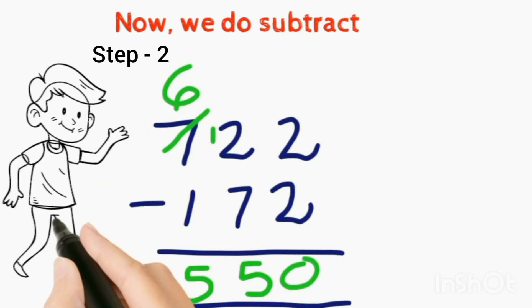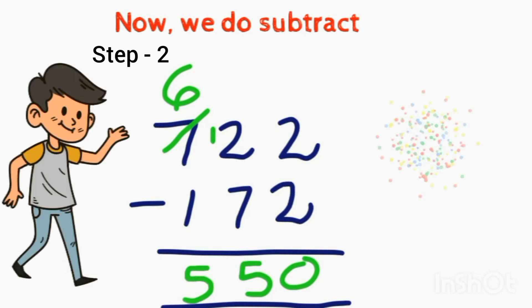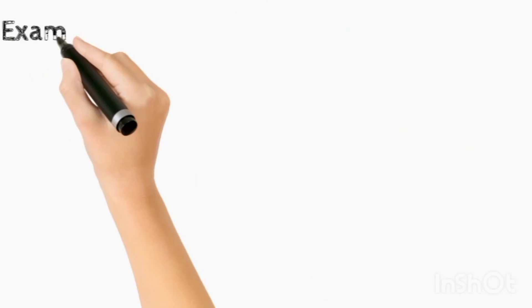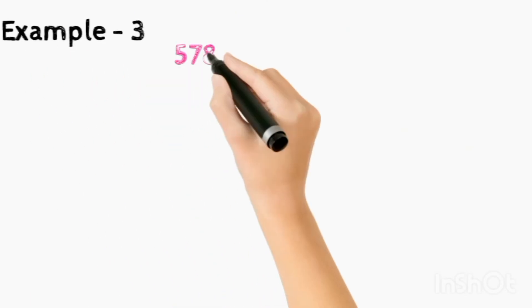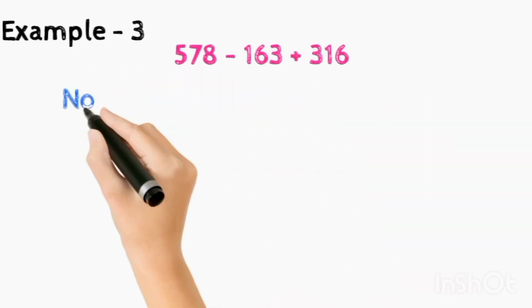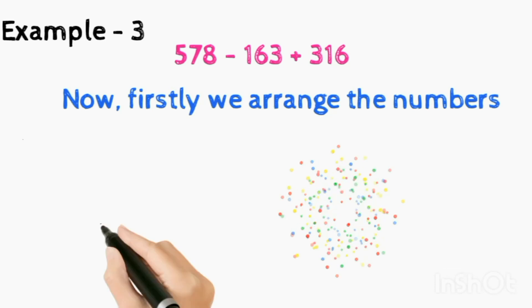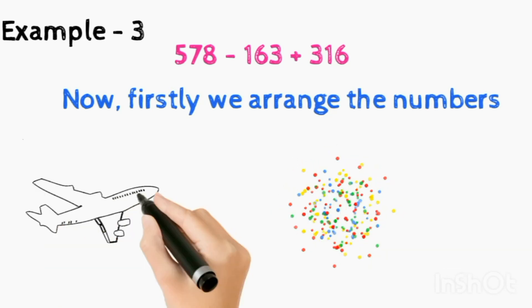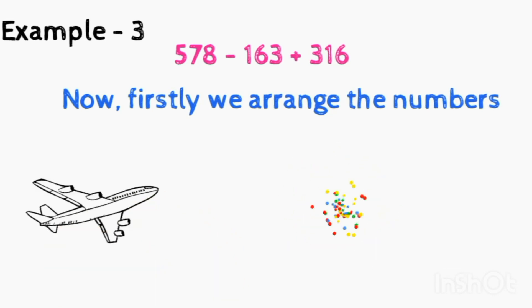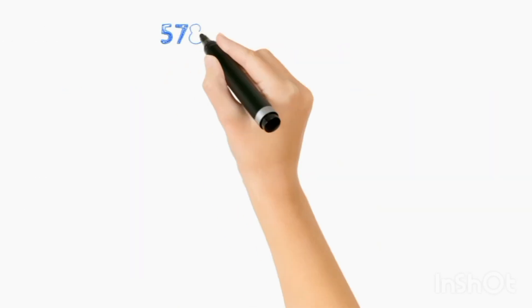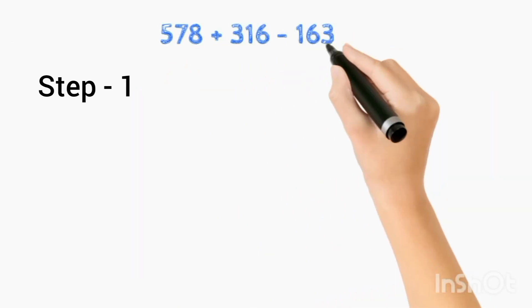Now we take another example. Example 3: 578 minus 163 plus 316. Now firstly we arrange the numbers. We arrange add first, then subtract: 578 plus 316 minus 163.